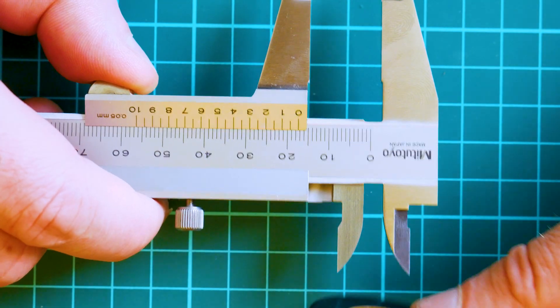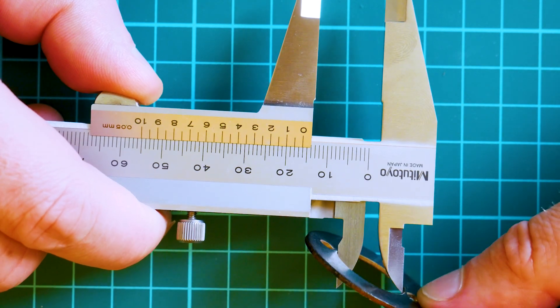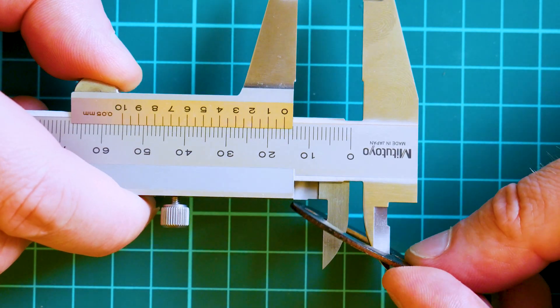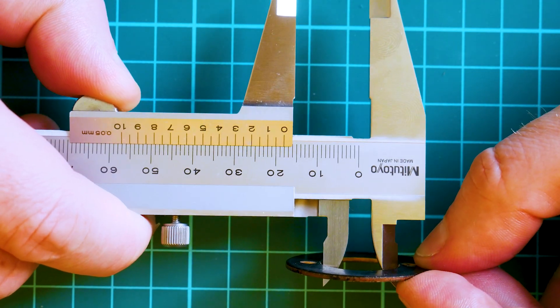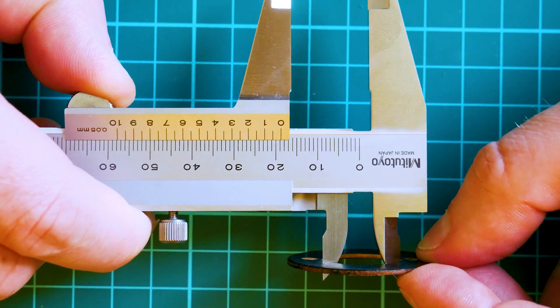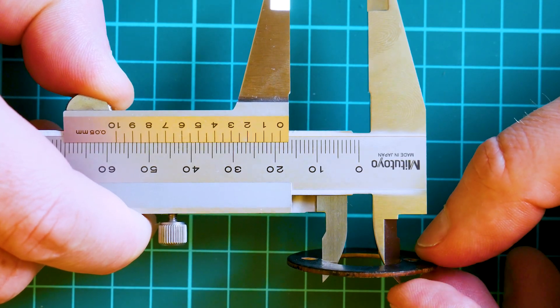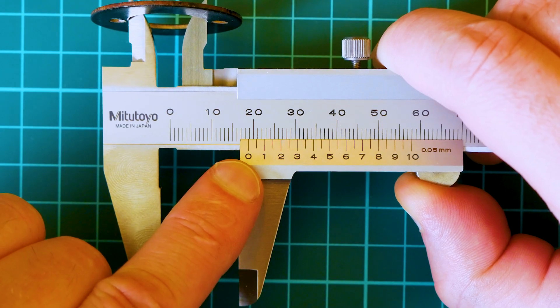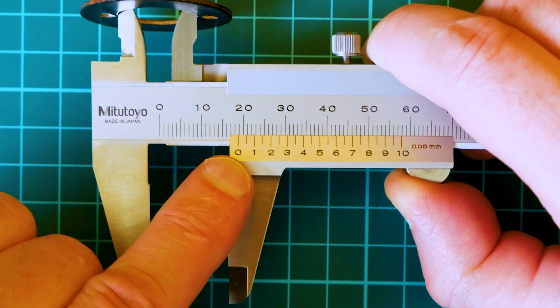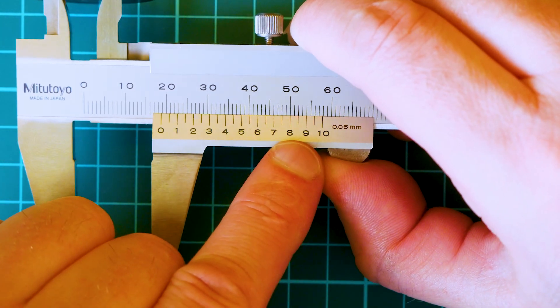You need to make sure when you measure things, you measure them straight—not like that, not like that—straight as possible. I extend my jaws and I see 18 millimeters. On the Vernier scale, the best alignment I have is at eight, so that means I have 18.8 millimeters.